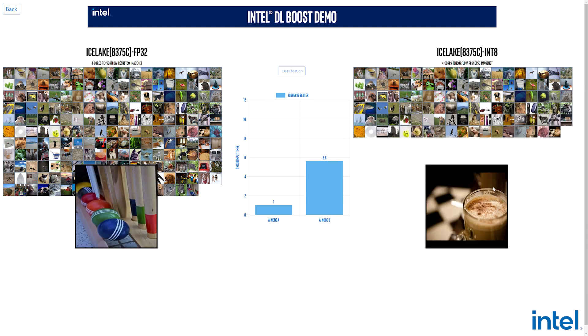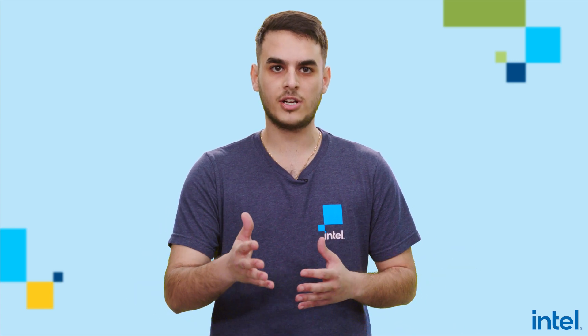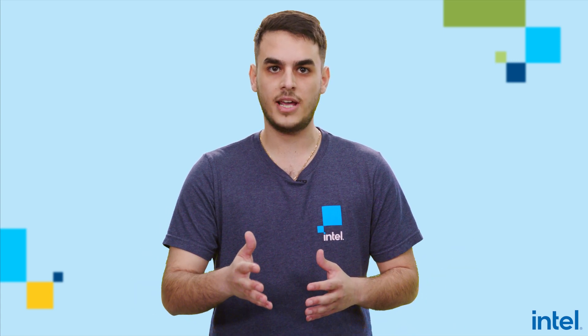As shown on the left, we have our baseline results showing throughput for the FP32 model. On the right, we have our quantized INT8 model that utilizes DL Boost and can achieve more than three times the throughput of our baseline while remaining accurate. Overall, AI developers can gain performance benefits and lower memory consumption from Intel's contributions to TensorFlow on Intel hardware with little to no code changes.